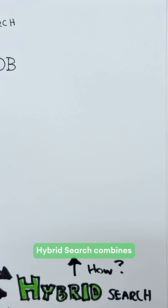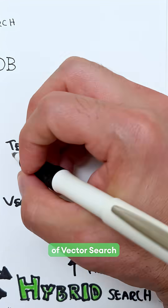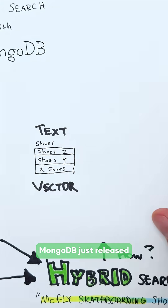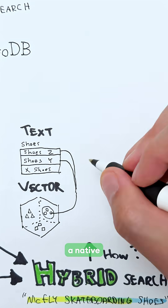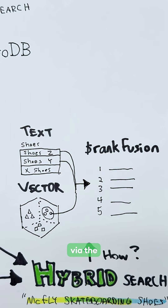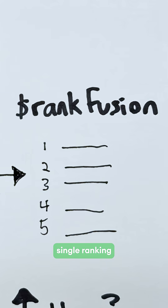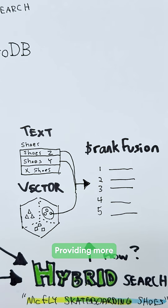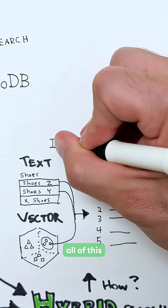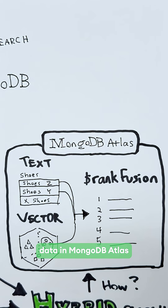But how does hybrid search work? Hybrid search combines the precision of text search with the semantic relevance of vector search. MongoDB just released a native hybrid search experience that leverages reciprocal rank fusion via the dollar rankFusion stage. It works by fusing the results of text and vector search into a single ranking, providing more refined results and making it easier to build. And you get access to all this out of the box by having your data in MongoDB Atlas.